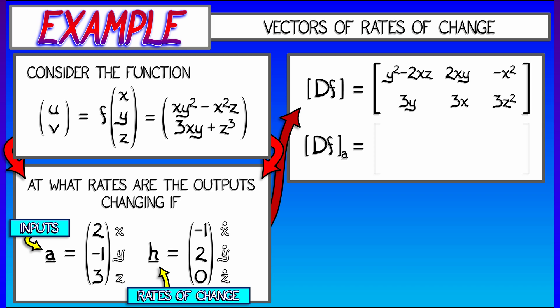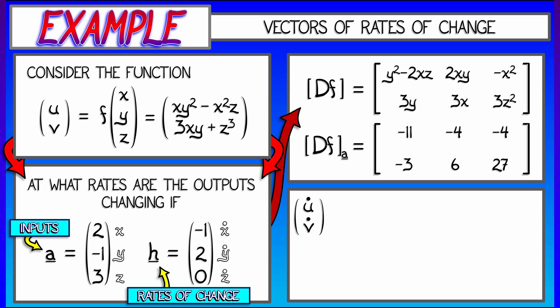That's my derivative. If I evaluate it at the input at which I'm interested in, at x equals 2, y equals negative 1, and z equals 3, I get a numerical matrix with numerical entries, and that is what I'm going to use to transform the vector of rates of change of inputs to the vector u dot v dot of rates of change of outputs. And this is going to happen through matrix vector multiplication.